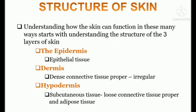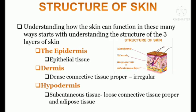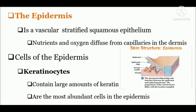Coming to the structure of the skin, it has three strata — strata means layers of skin. The first one is the epidermis, the outermost or superficial layer. The second one is the dermis, the middle layer. The third one is the subcutaneous tissue or hypodermis, the innermost layer. Coming to the epidermis, which is the epithelium of the skin and the most superficial layer.